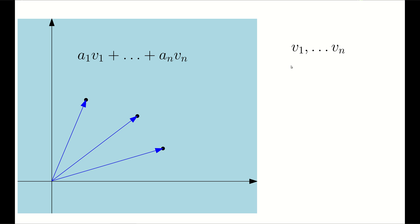Given a number of vectors — n vectors in d-dimensional space — a linear combination of them is in this form, where ai are real numbers. For example, if we have three vectors in the plane, then every point in the plane can be written as a linear combination of these three vectors.